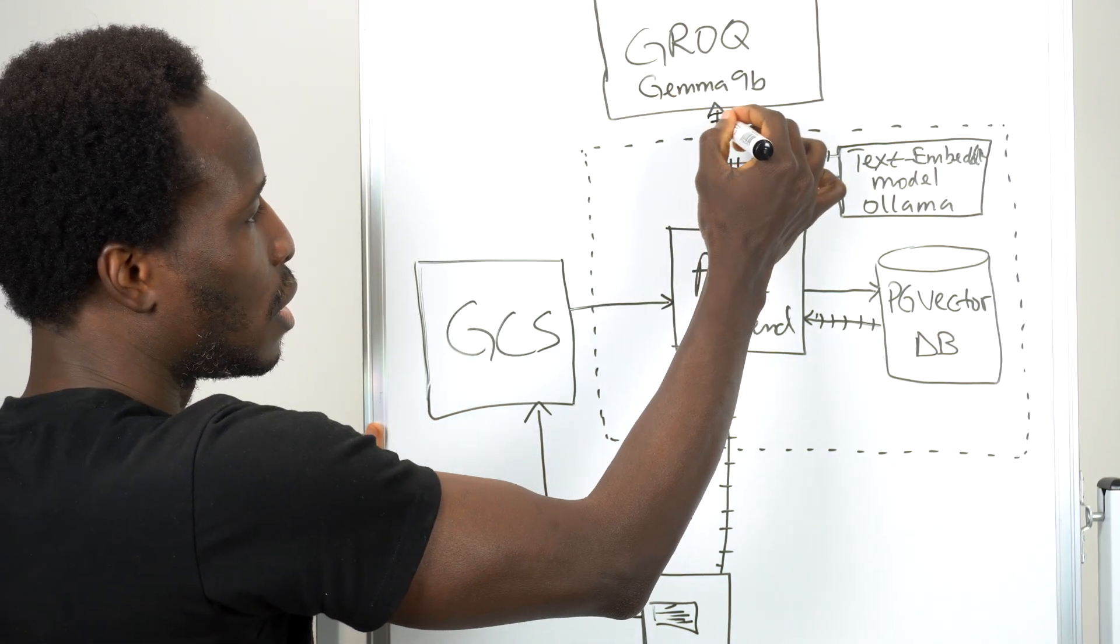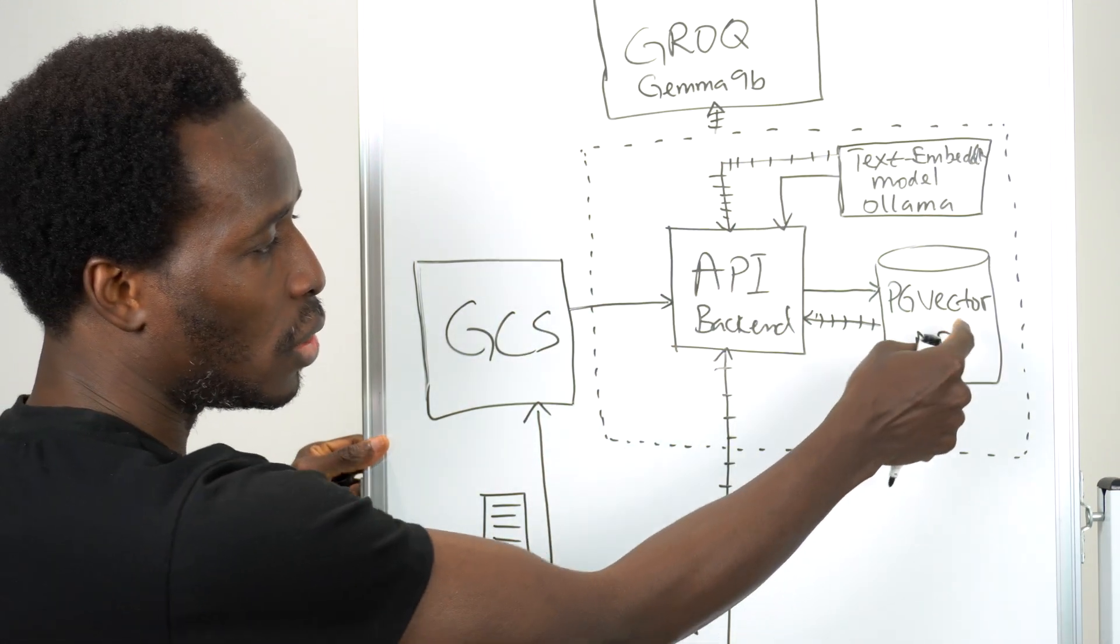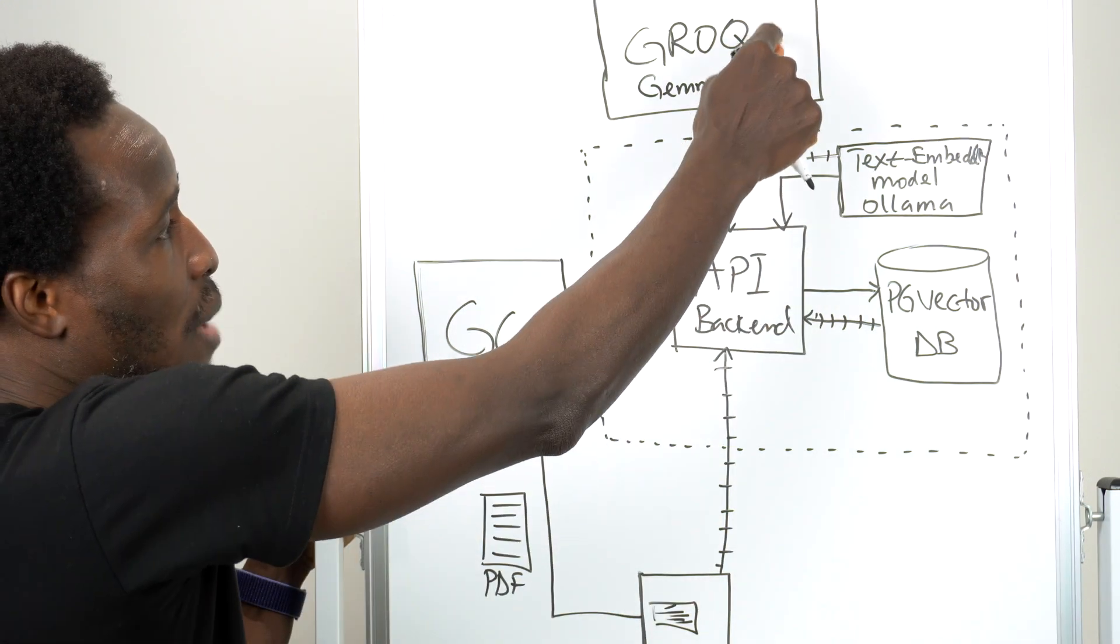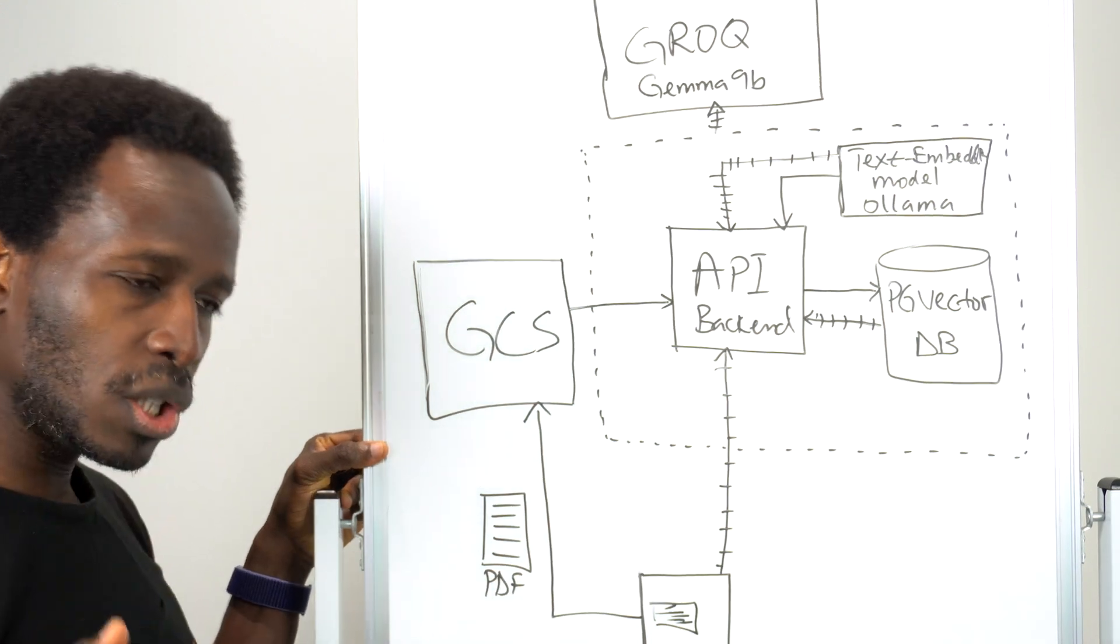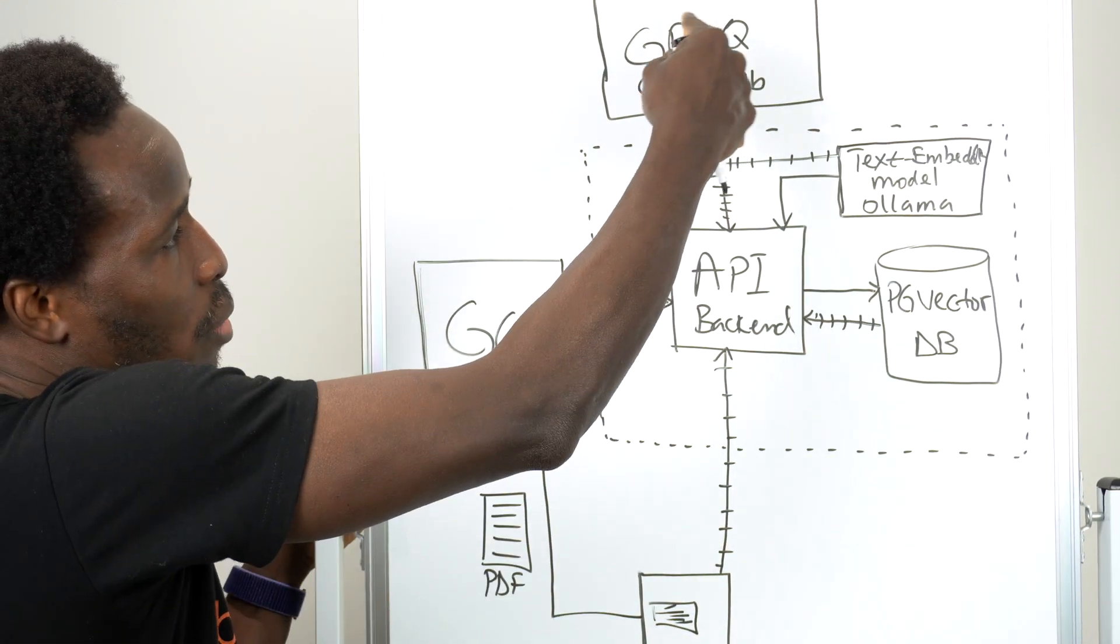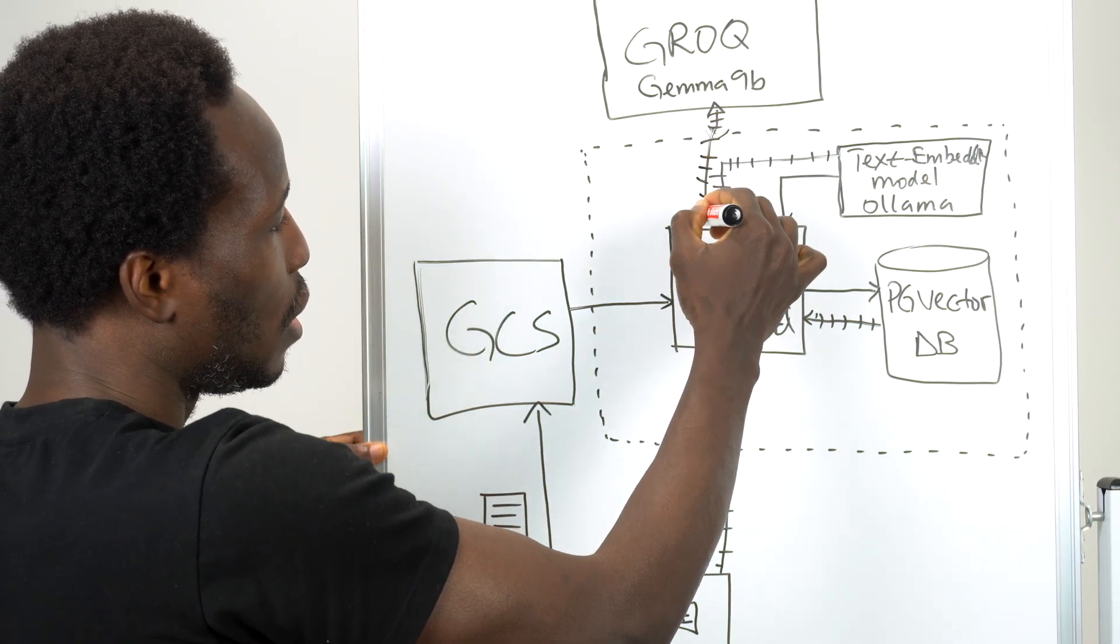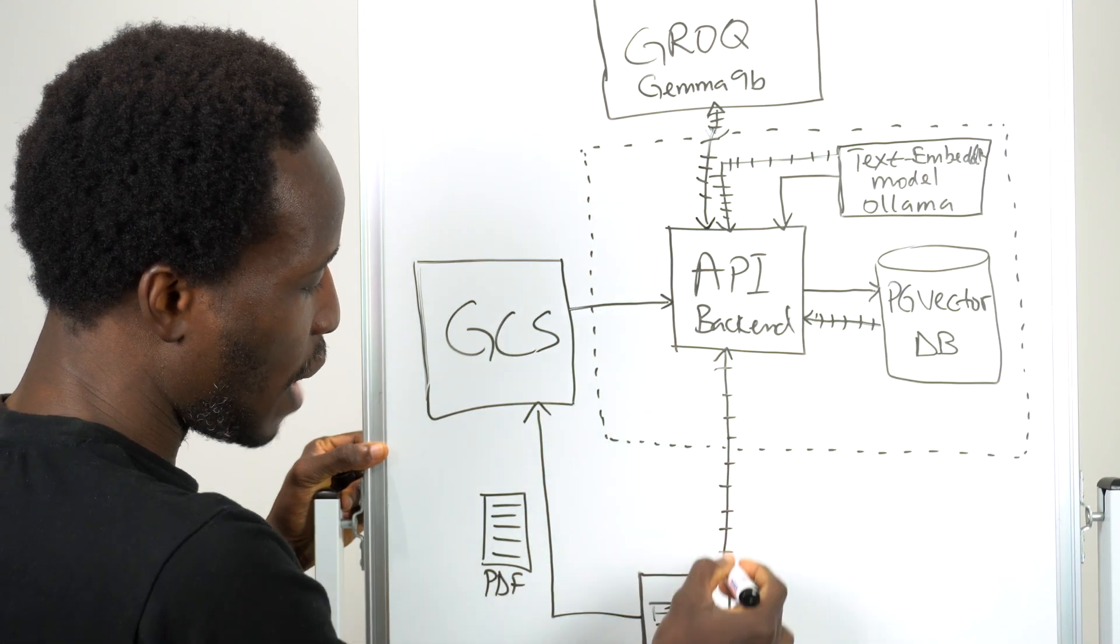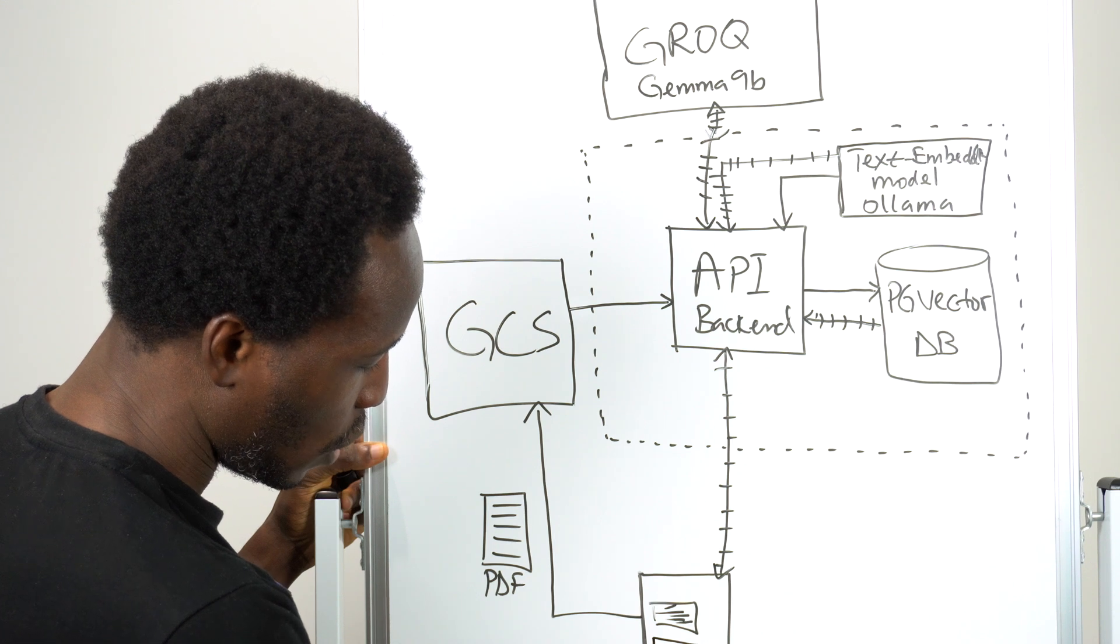Now, what we are sending to Grok or Gemma, the AI model, is the question and all the data that matches the meaning of that question that we had embedded and stored in our vector database. The AI model here would have a prompt telling it, take this data and use this data to answer this question that the user has asked. So the AI model would do its thing and then send us back a response. That response would have the answer to the question that the user is asking. So we take that answer and then we send it back to the user and then the user sees the answer to their question in the app.